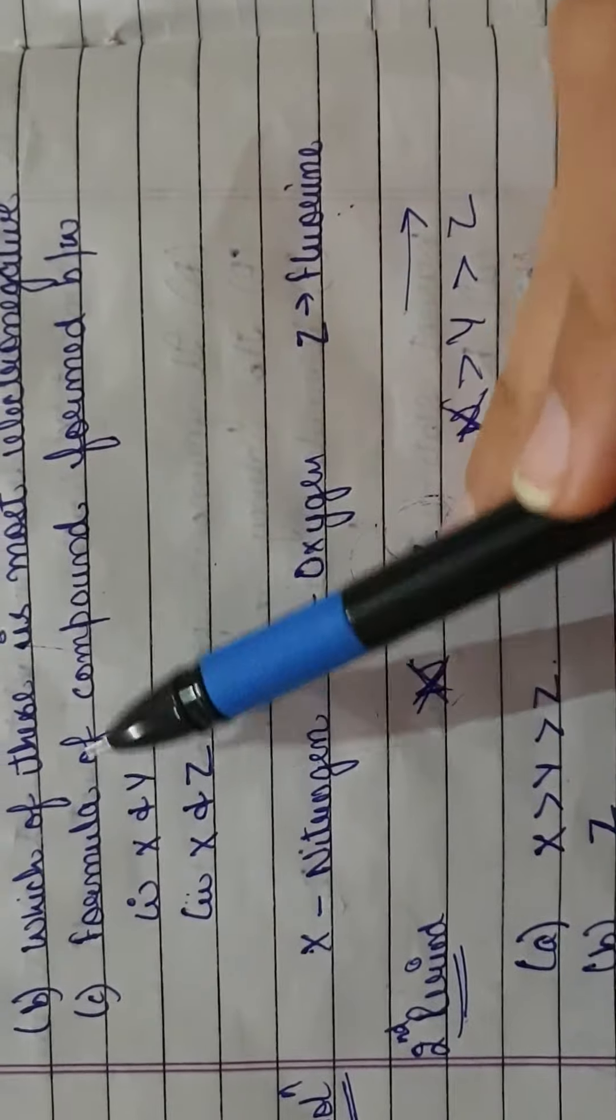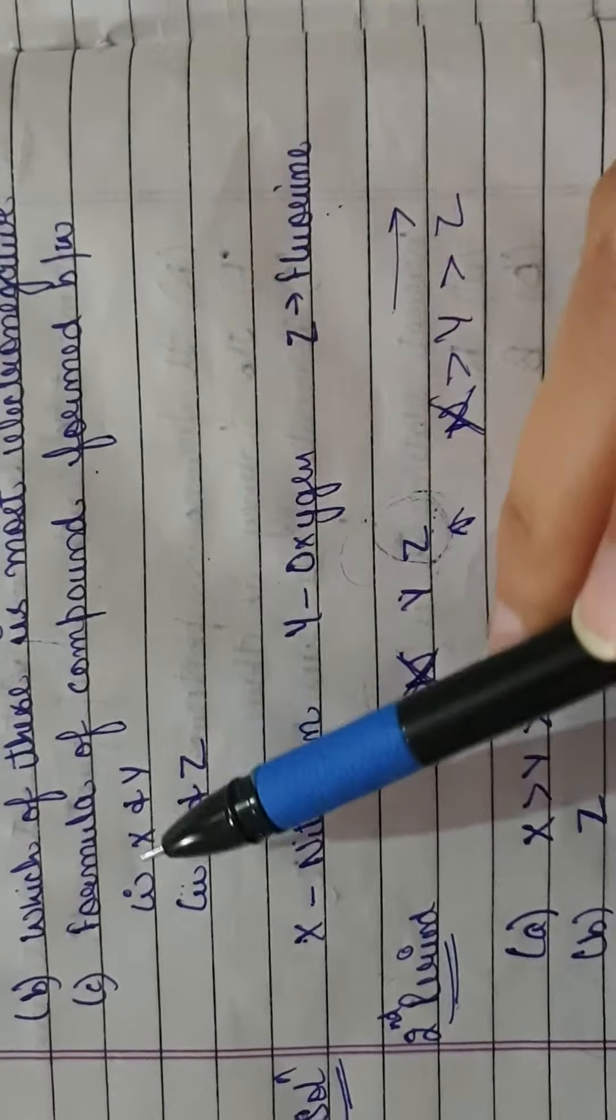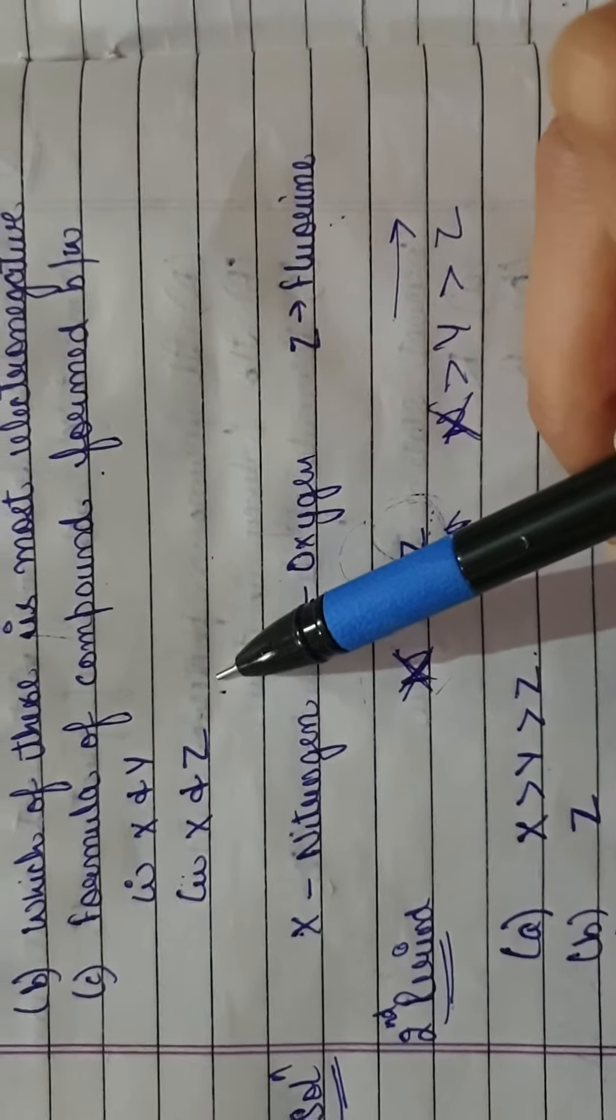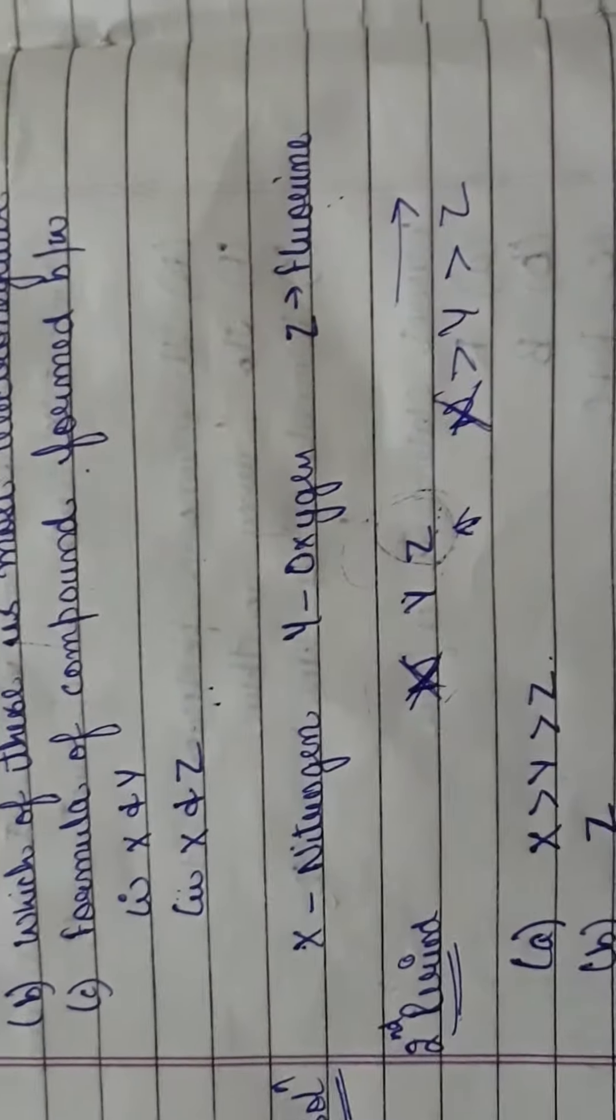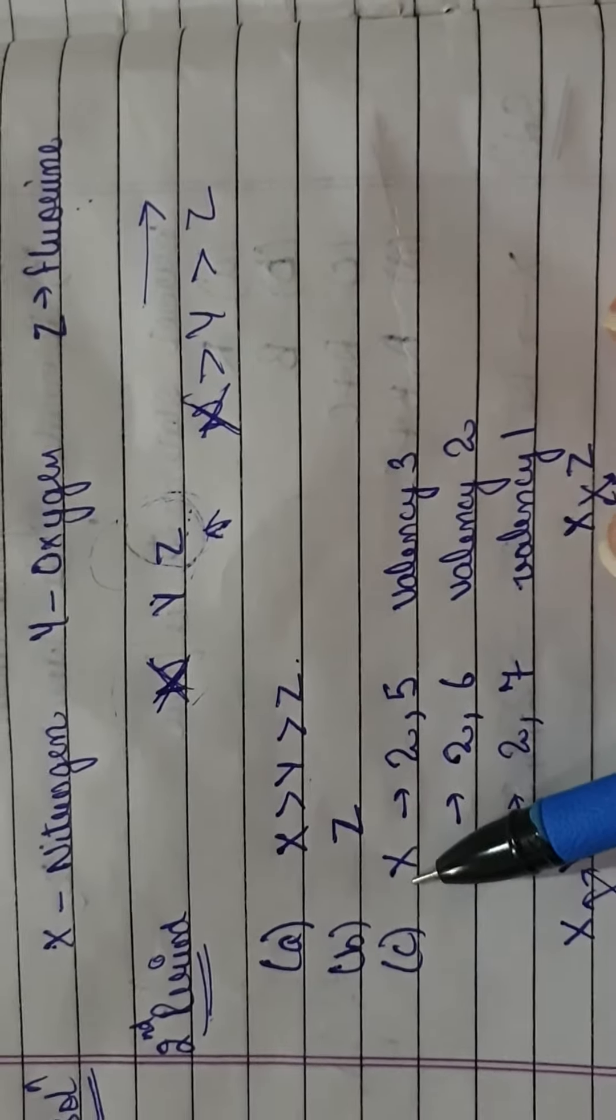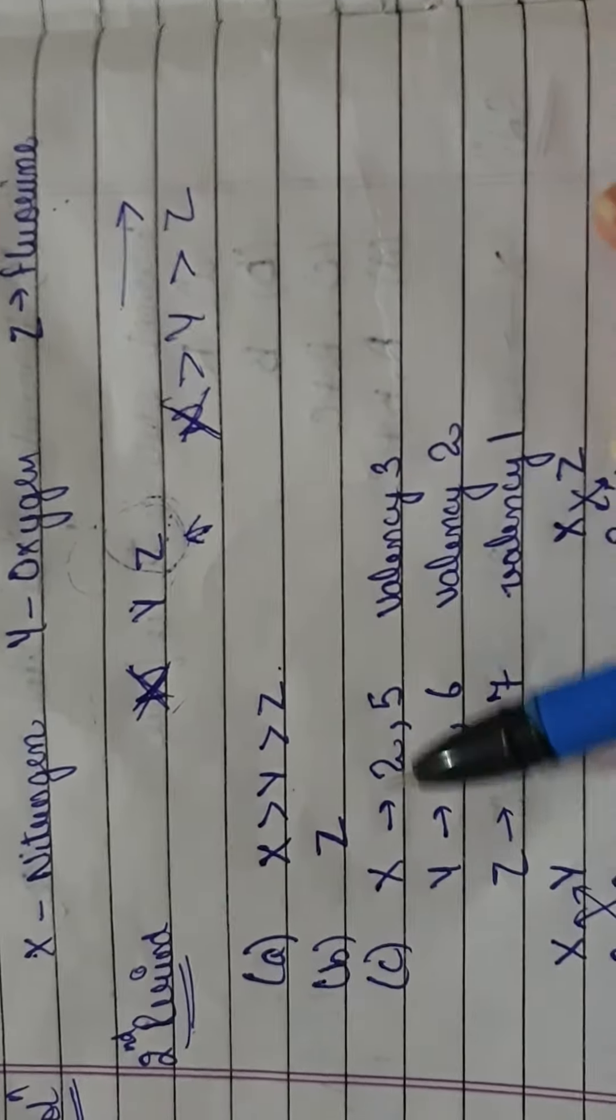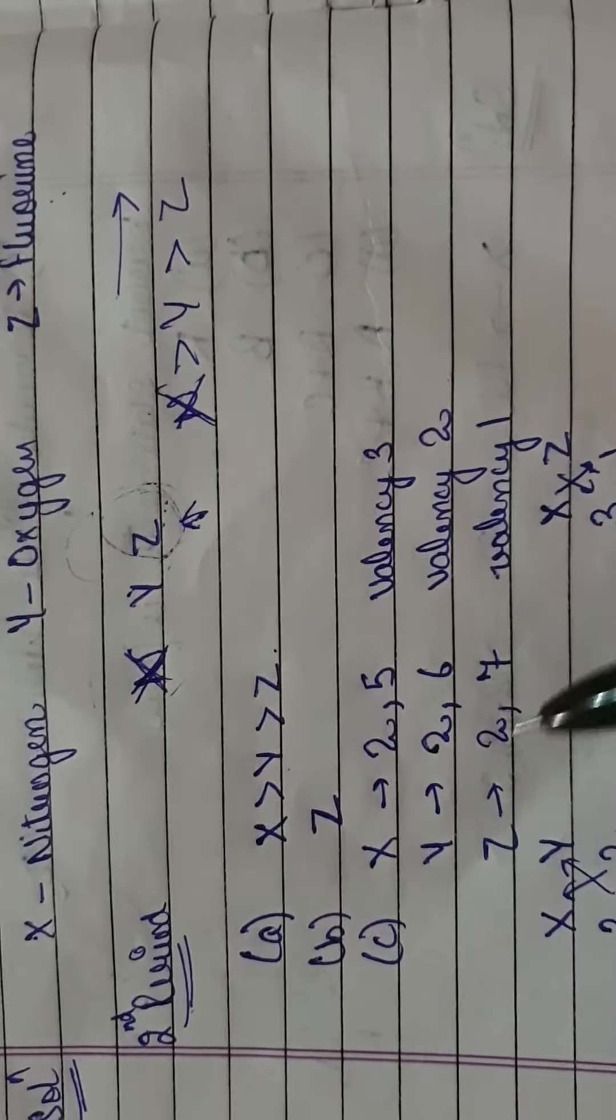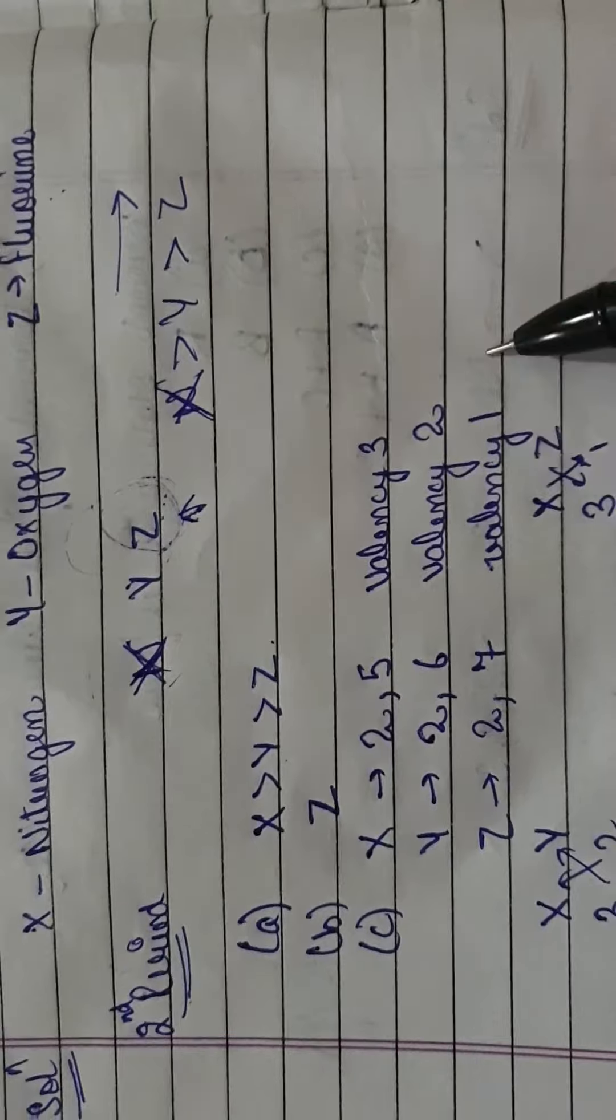To find the formula of compounds between X and Y, and X and Z, we need to find the valencies. X has configuration 2,5 so valency is 3. Y has configuration 2,6 so valency is 2. Z has configuration 2,7 so valency is 1.